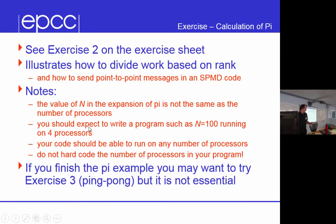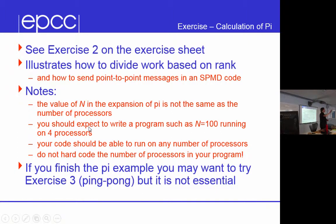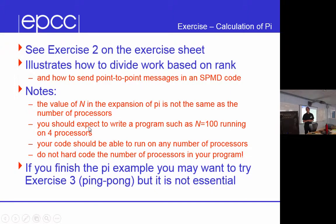This is surprisingly hard, depending on how your mind works. Note that N in the summation is not the number of processors. I recommend using N equals 840. Don't worry about the subtlety that N might not divide evenly by the number of processors — just assume it does, because 840 divides by almost everything. Don't bother with edge cases like N being a prime number. If you finish the pi example, you may want to try the ping-pong example, but the pi example is much more useful and illustrative.